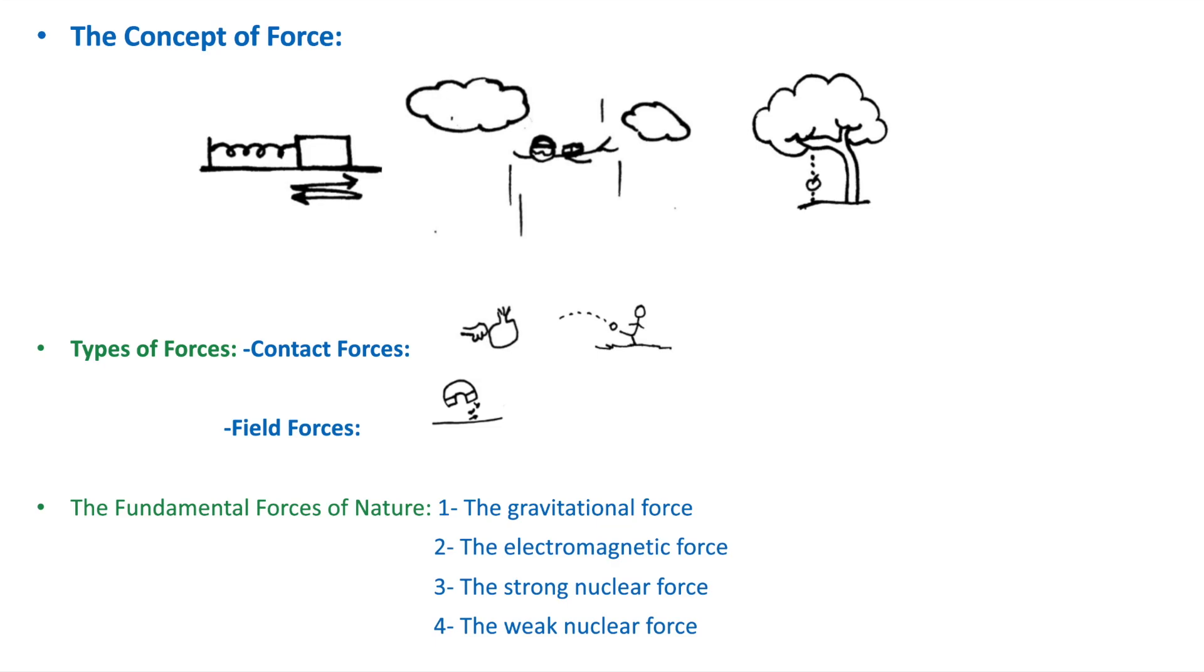We will find that such motions occur when objects interact with each other. The apple is interacting with the earth, the skydiver is interacting with air, and the block is interacting with the spring. The interaction between one object and another or between the object and its environment defines a quantity named force.